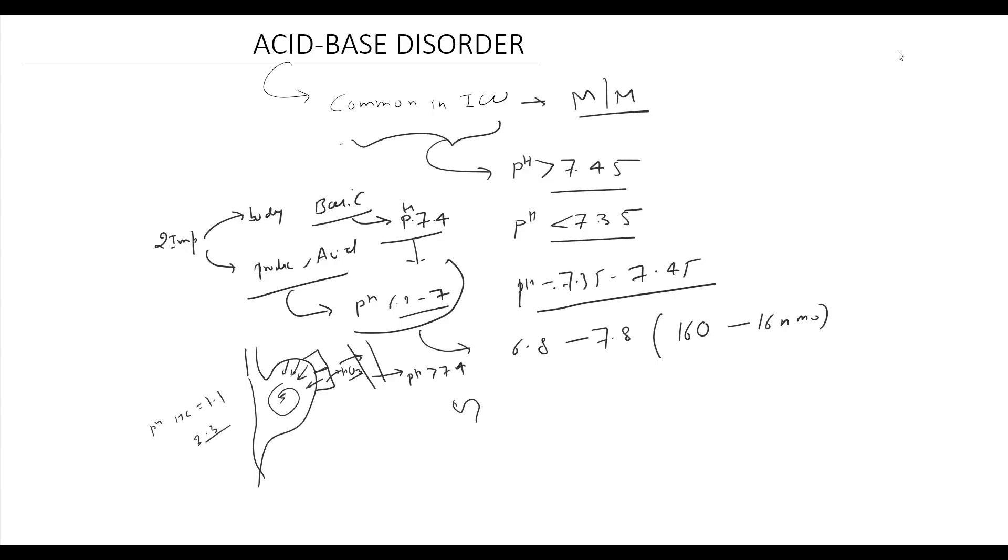Similarly in the nephron, DCT or CD cells excrete acid. Urinary tubule pH is acidic while the interstitium is basic. In RBCs, when CO2 enters, it reacts with H2O to form carbonic acid, which dissociates into H+ and HCO3-. H+ is taken up by hemoglobin and HCO3- moves out, making plasma alkaline. Hemoglobin's histidine residue acts as the buffer.